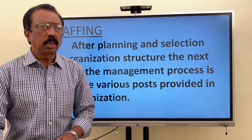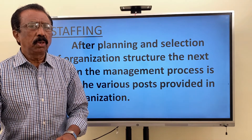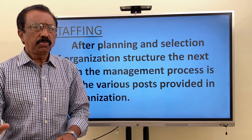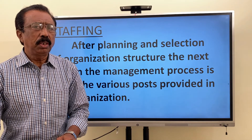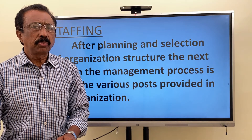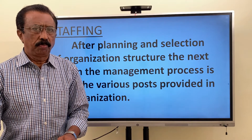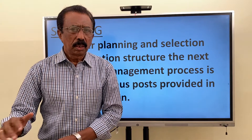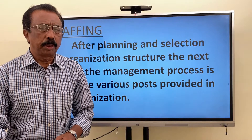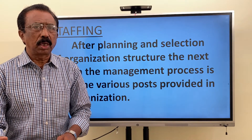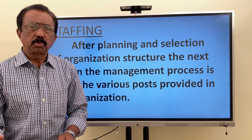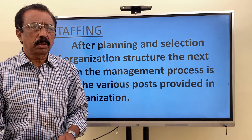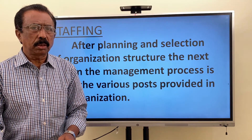Let me take an example. You take the example of any organization or any institution. The most important asset of any institution is the people — that means the staff who are working there. In a manufacturing concern, the management will provide capital; if not enough, they can borrow capital. Raw materials and machinery they can buy from the market.